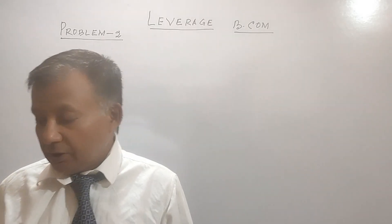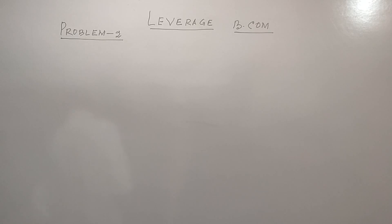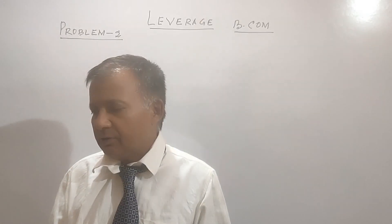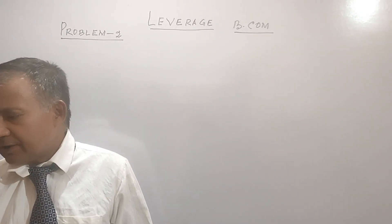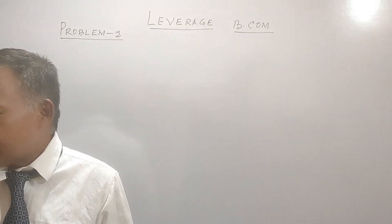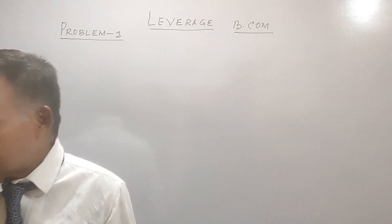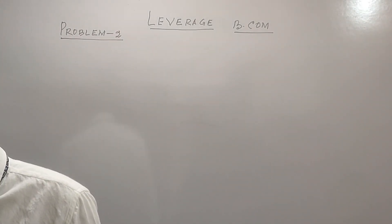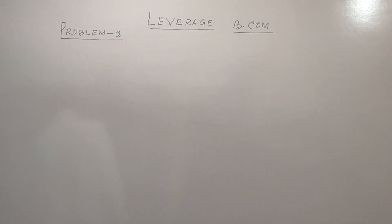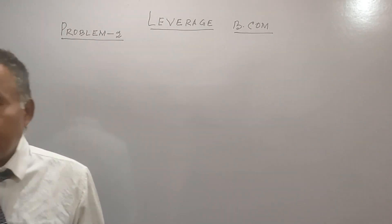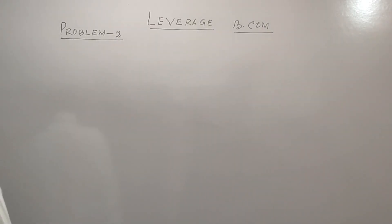Now, you have gone through question number two. This is a small question. The firm's sales is 40 lakhs, variable cost 25 lakhs, fixed cost 6 lakhs, and 10% debt of rupees 30 lakh. Equity capital 45 lakhs. Calculate operating leverage and financial leverage.